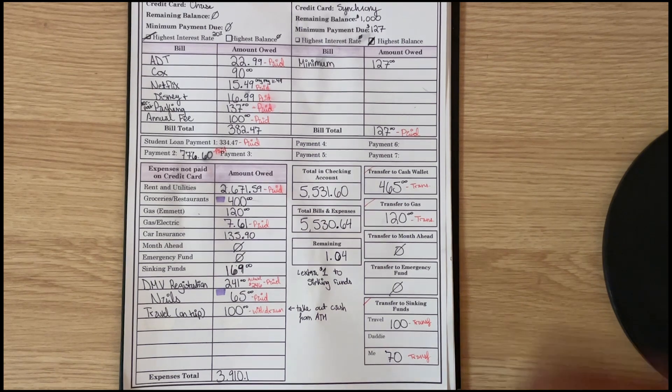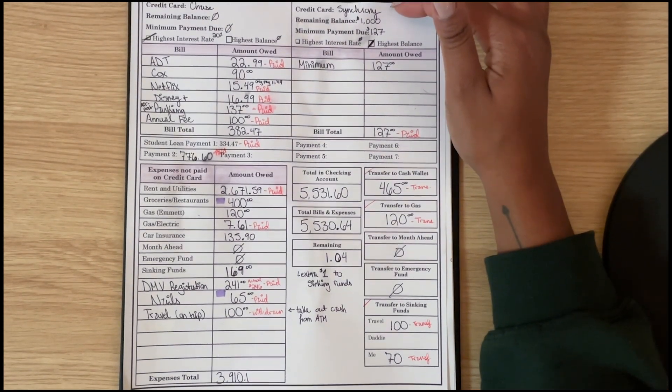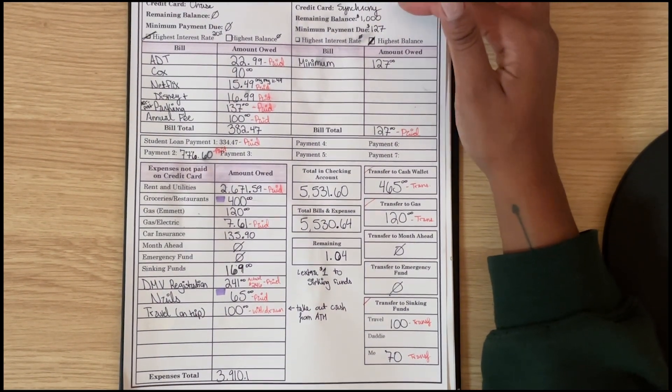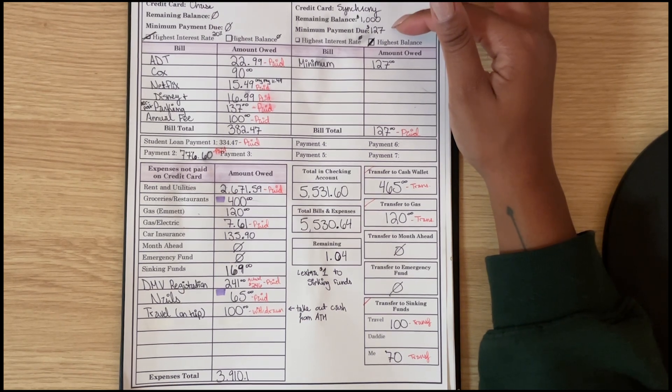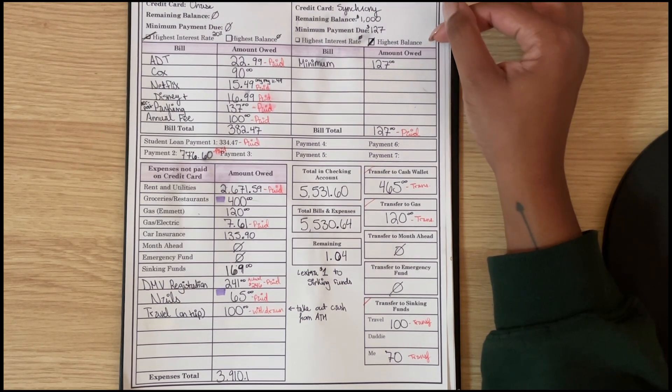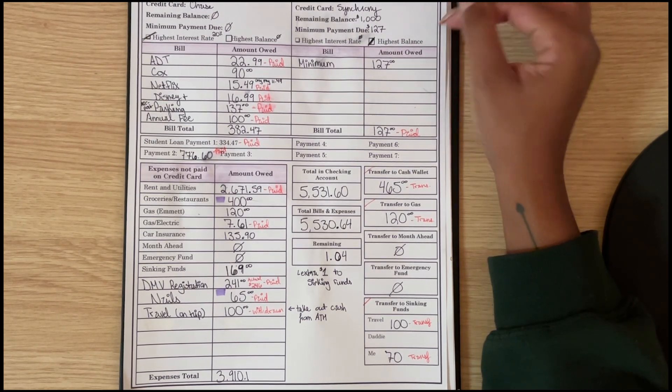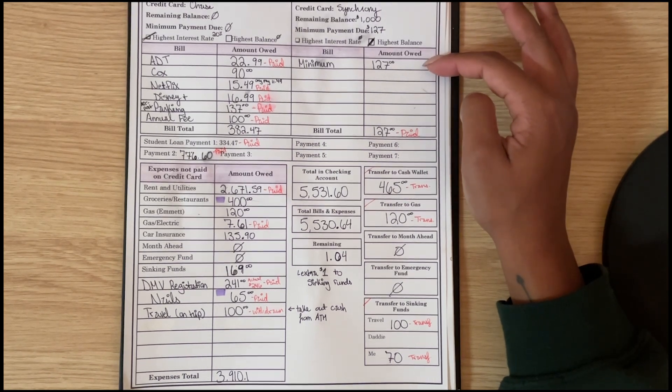Starting off, my credit card Synchrony - this is for my mattress. The remaining balance was $1,000, my minimum payment is $127, and it is the card with the highest balance, so I just put my minimum monthly payment towards it this month.